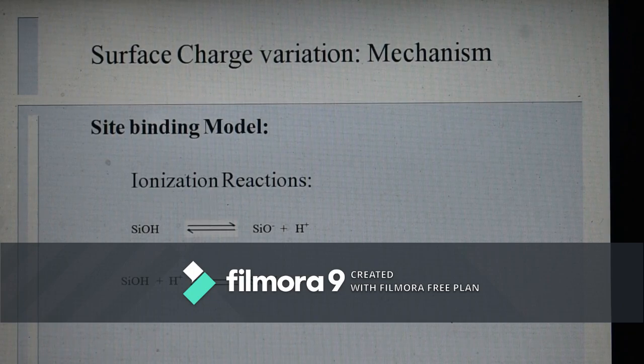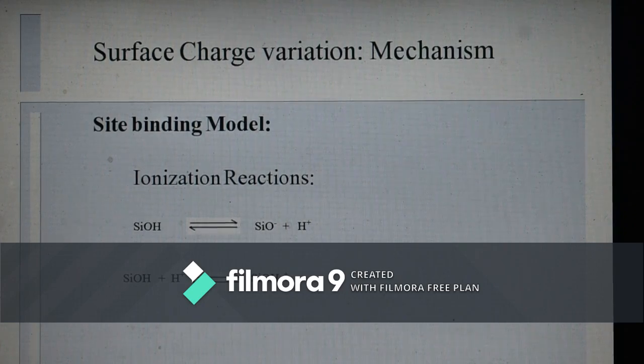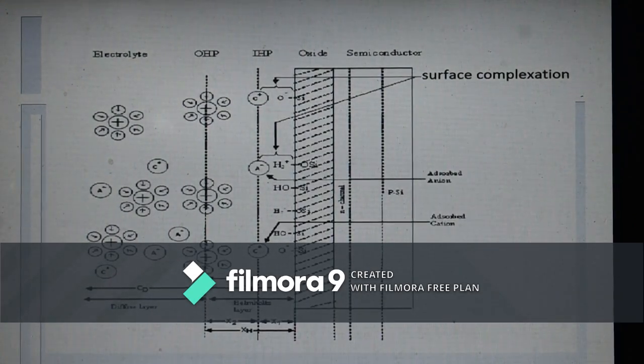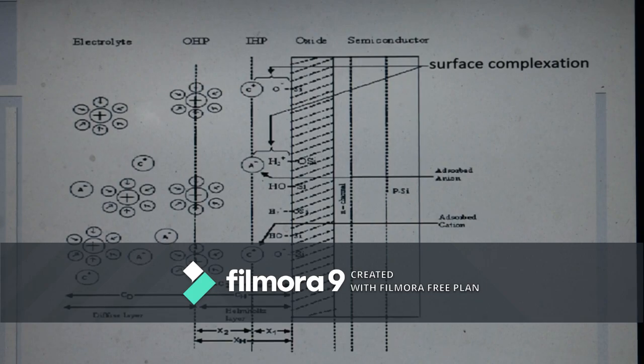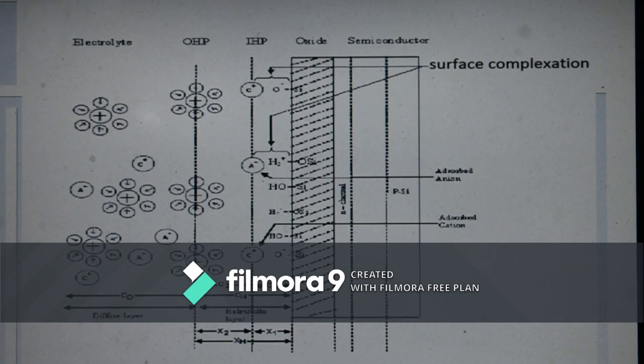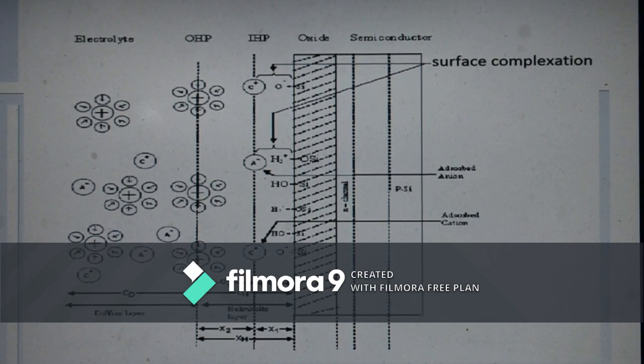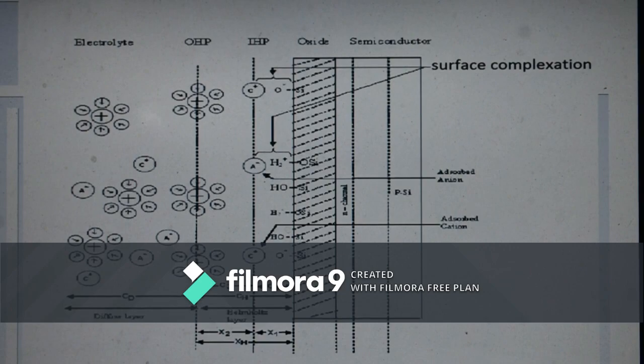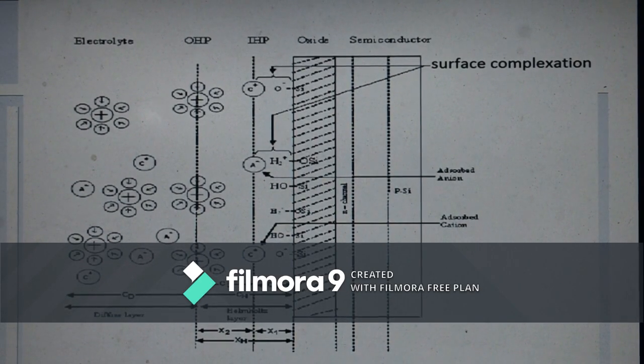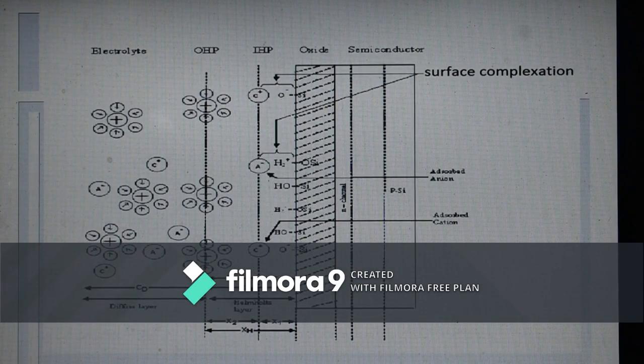Since basically ISFET comes from EIS structure which is a capacitor system, we need to know in what way surface charge at the interface of liquid and solid phase is changing. This variation of surface charge can be well explained with the help of one very famous model called site binding model.